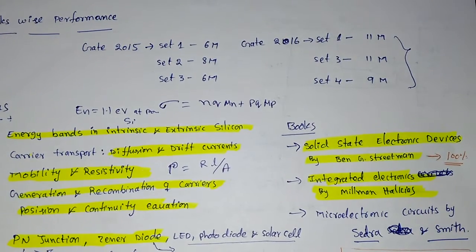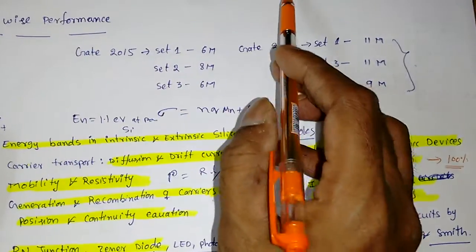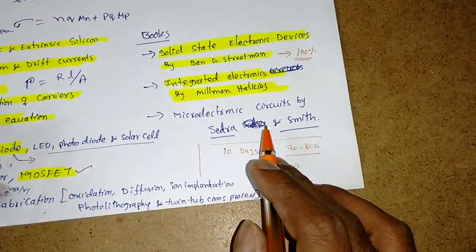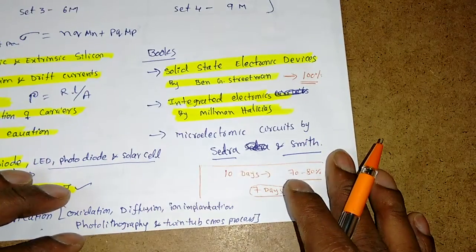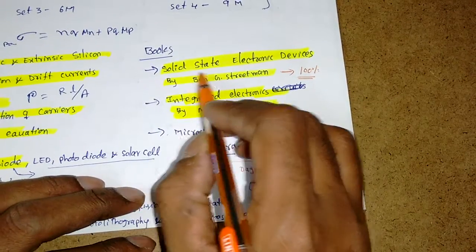This video is a continuation of the previous video. We discussed how to prepare for the EDC course for GATE exam. Now, what books should we prefer? My first preference should be Solid State Electronic Devices by Ben G. Streetman.